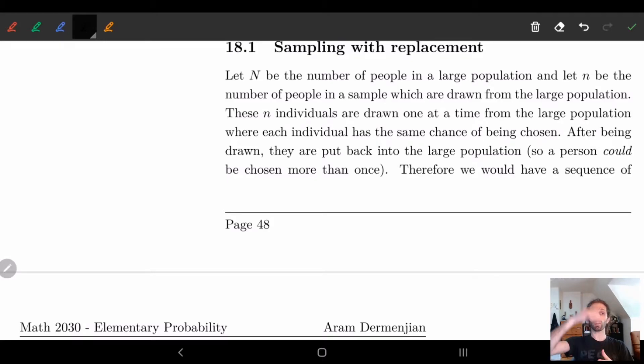And the thing is when we draw a person, we're going to draw this like a marble out of a bag. We take the marble out, so we ask an individual some question and then we put them back in. So we put the marble back in. So in other words, a person can be asked the same question twice. So we might ask the same person multiple times. So this is something we might have to consider.